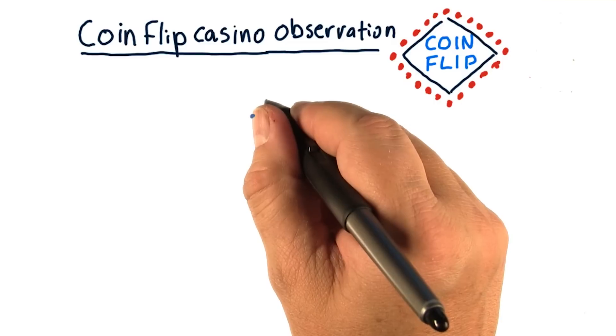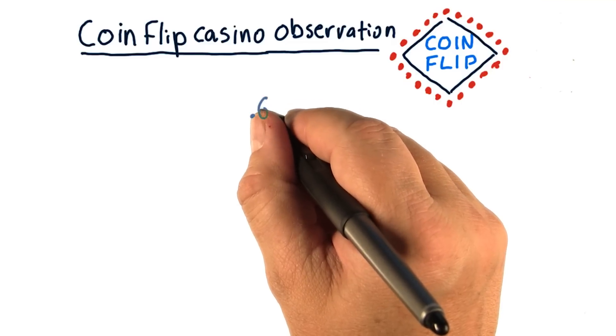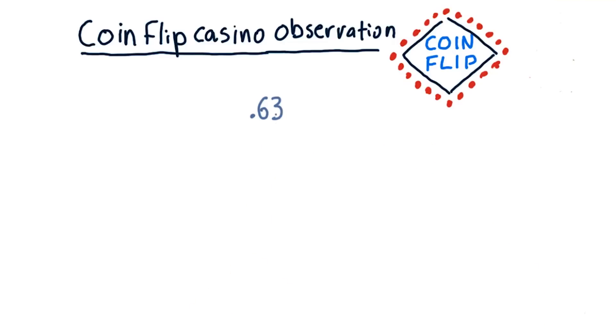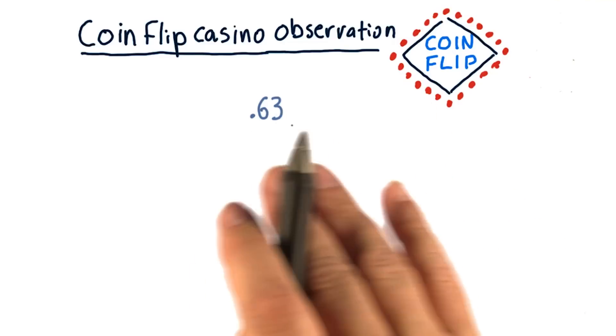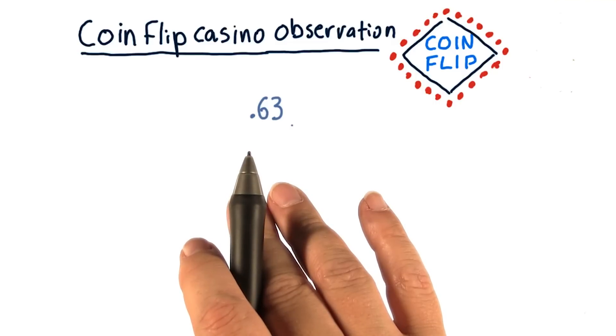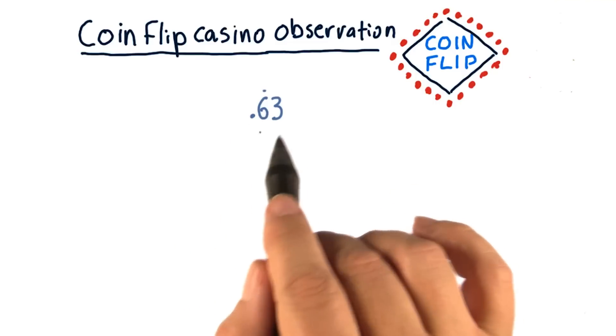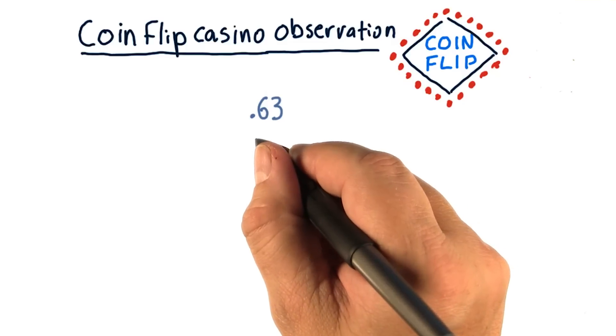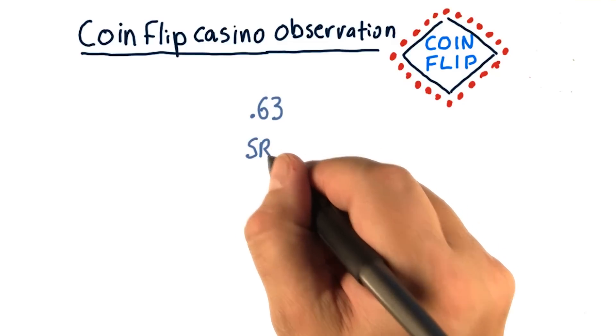Now the risk-adjusted reward or the Sharpe ratio for the single bet was 0.63. In other words, if we bet all 1,000 chips on a single flip of the coin, our Sharpe ratio is 0.63. So let's call this SR_single.